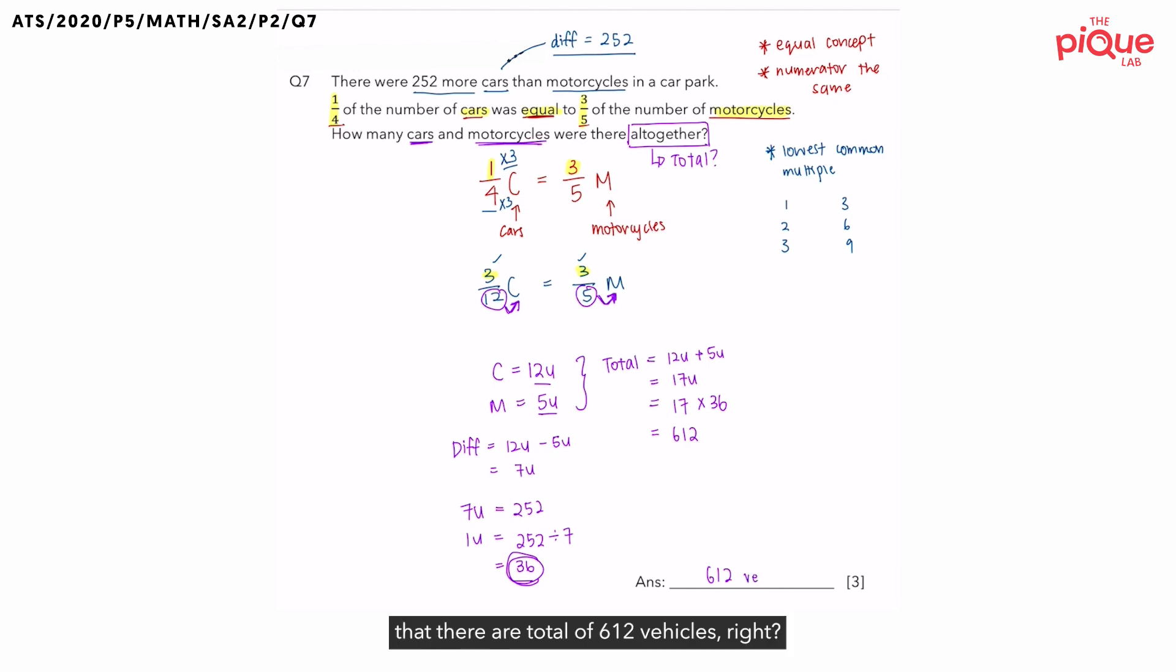So, since we are talking about vehicles, we have to put down that there are a total of 612 vehicles, right? We are not talking about apples. We are talking specifically about cars and motorcycles, which they all fall under vehicles. And we have come to the end of the question.